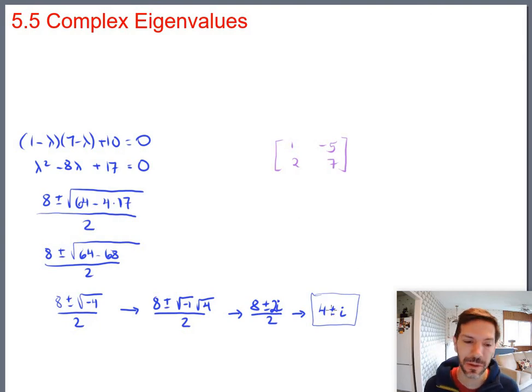Anyway, so we've got two complex eigenvalues. We've got 4 minus i and we've got 4 plus i. Let's just start with 4 plus i. And let's just set up the augmented matrix. So we've got 1 minus 4 plus i, negative 5, 0, 2, 7 minus 4 plus i, 0. And you can already see why it's more work, right, to row reduce one of these things.